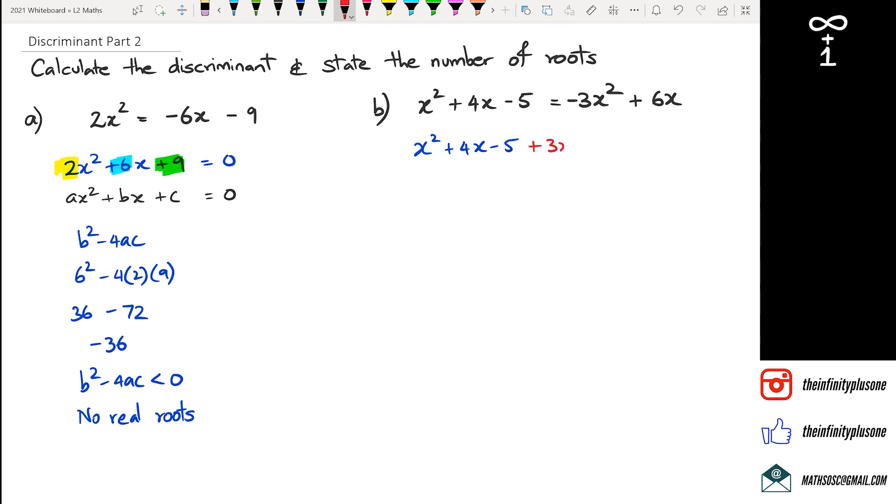So collecting my like terms, I've got 4x² - 2x - 5 = 0.